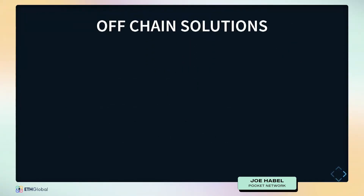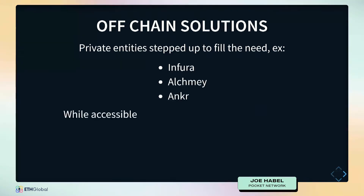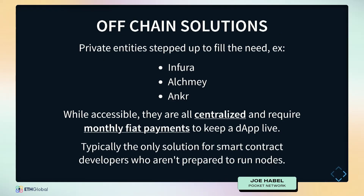Some solutions for this: private entities have stepped up to fill this space — examples include Infura, Alchemy, and Anchor. These are great products and make blockchain development super accessible, but they're centralized and all require monthly fiat payments to keep that DApp open. Typically the only solution for contract developers who don't want to do this is to stand up their own servers.